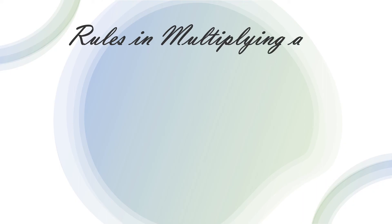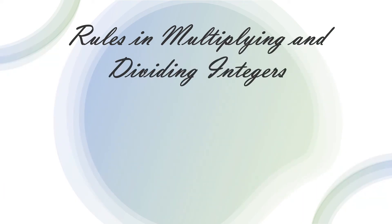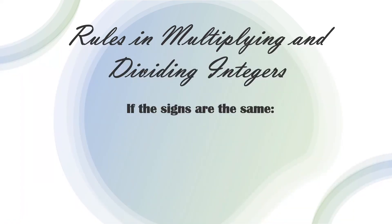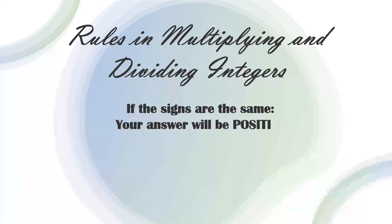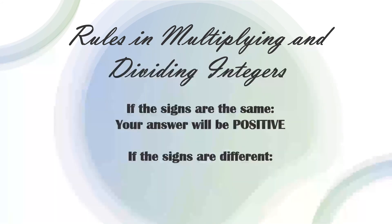Rules in multiplying and dividing integers: if the signs are the same, your answer will be positive; if the signs are different, your answer will be negative.